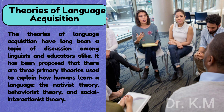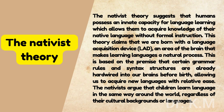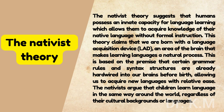The theories of language acquisition have long been a topic of discussion among linguists and educators alike. It has been proposed that there are three primary theories used to explain how humans learn a language: the nativist theory, the behaviorist theory, and the social interactionist theory. The nativist theory suggests that humans possess an innate capacity for language learning, allowing them to acquire knowledge of their native language without formal instruction. This theory claims that we are born with a language acquisition device, or LAD — an area of the brain that makes learning languages a natural process — and that certain grammar rules and syntax structures are already hardwired into our brains before birth. Nativists argue that children learn language in the same way around the world, regardless of their cultural backgrounds or languages.